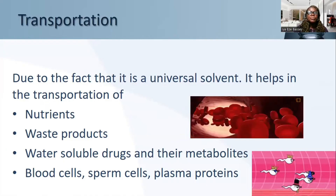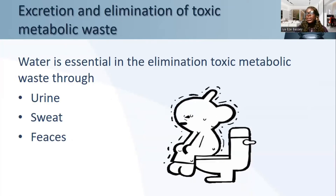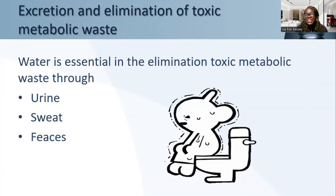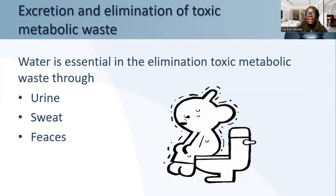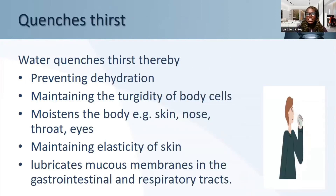When it comes to excretion and elimination of toxic metabolic waste, water is a heavyweight because it helps us get rid of toxic metabolites and waste products through urine, sweat, and feces. So we get rid of waste products in those ways.